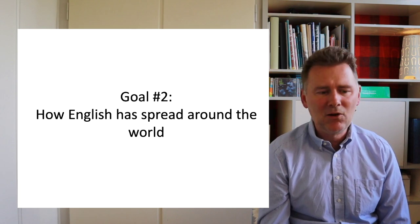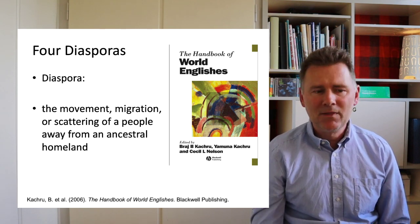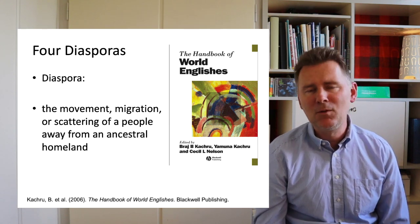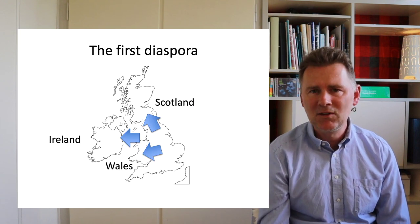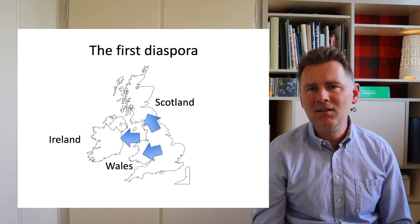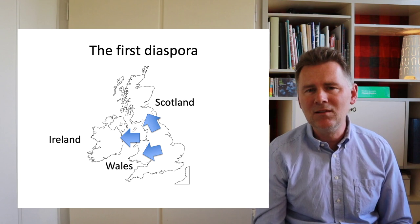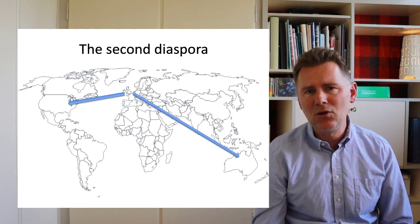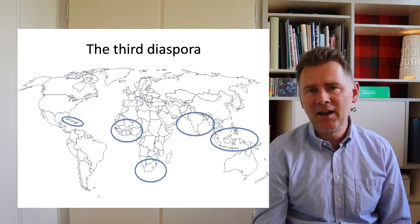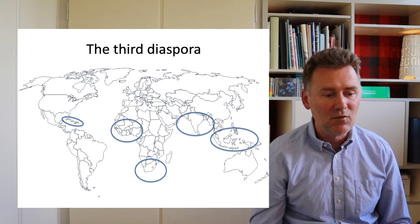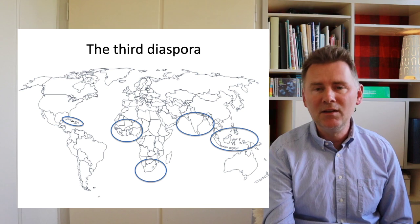Let's move on to goal number two and talk about how English spread around the world. In this video series I'm going to distinguish between four different diasporas. A diaspora is a term for the movement, migration, or scattering of a people away from an ancestral or traditional homeland. The first diaspora describes the movement away from the birthplace of Old English into Wales, Ireland, and Scotland, where new varieties of English formed. The second diaspora describes the beginning of Britain's colonial history into what is nowadays the United States and Australia. The third diaspora is a consequence of the colonial history of Britain and other powers in the Caribbean, West Africa, South Africa, India, Indonesia, and Southeast Asia.